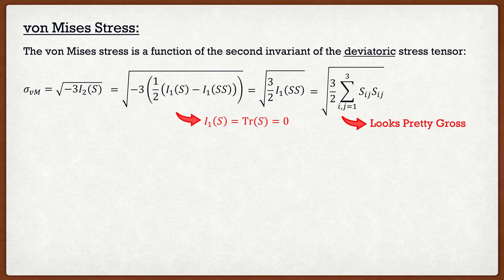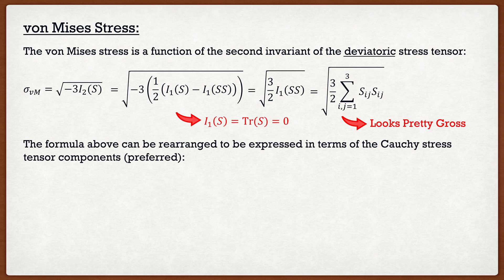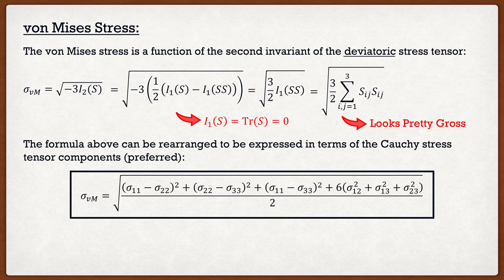We can simplify this further into component form expressed in terms of the Cauchy stress tensor components rather than the deviatoric stress tensor components. The von Mises stress equals the square root of: (sigma11 minus sigma22) squared plus (sigma22 minus sigma33) squared plus (sigma11 minus sigma33) squared, plus 6 times (sigma12 squared plus sigma13 squared plus sigma23 squared), all divided by 2. It's a mouthful, but given a Cauchy stress tensor you have everything needed to calculate the von Mises stress.